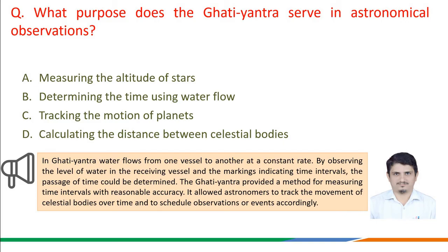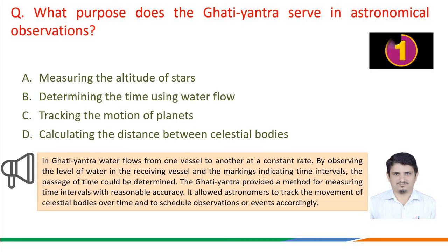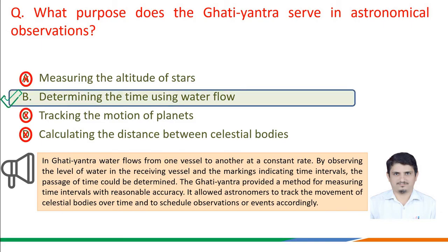In the Gati Yantra, water flows from one vessel to another at a constant rate. By observing the level of water in the receiving vessel and the markings indicating time intervals, the passage of time could be determined. The Gati Yantra provided a method for measuring time intervals with reasonable accuracy, allowing astronomers to track the movement of celestial bodies over time and schedule observations accordingly. Therefore, the correct answer is option b: determining the time interval using water flow.